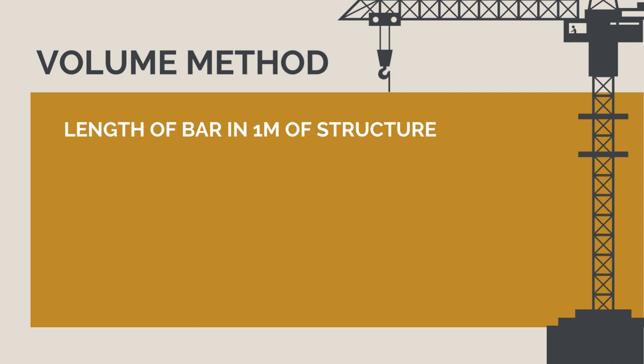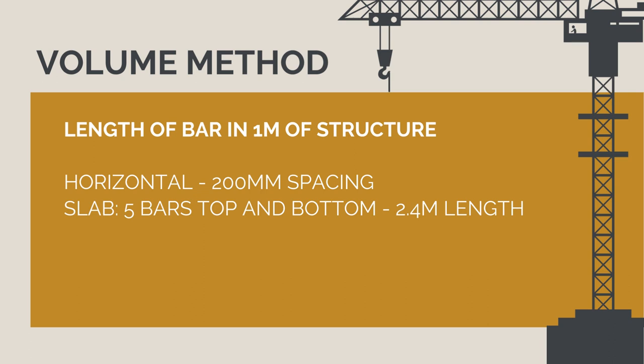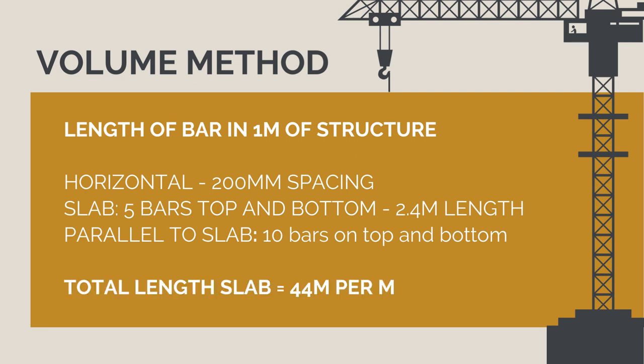We then need to calculate the length of N12 bar in one meter of this structure. Assuming the 200 millimeter horizontal spacing in the slab, horizontally due to the 200 millimeter spacing, horizontally we have 5 bars top and bottom each 2.4 meters long. They are 2.4 meters long because we have to factor in the 400 millimeter lap length, which gives us 24 meters. Then running parallel to the slab at 200 millimeters spacing, we will have 10 bars top and bottom to cover the full 2 meter width. This will also give us 20 meters. This totals up to 44 meters of rebar per meter of the slab.